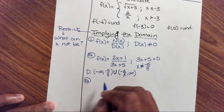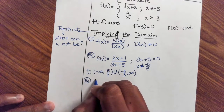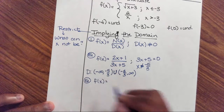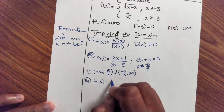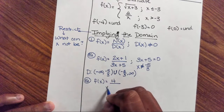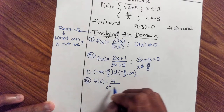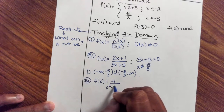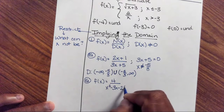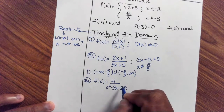Now try this problem: f(x) = 4 / (x² - 3x - 28). What can the bottom not equal?